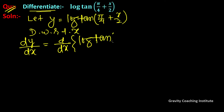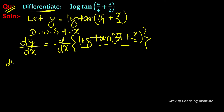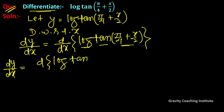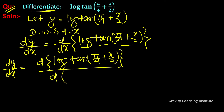We need to use the chain rule here. Applying chain rule: differentiate log first, then tan, then the angle. So dy/dx equals, by chain rule, 1 over tan(π/4 + x/2) into the derivative of tan(π/4 + x/2).